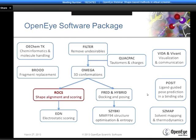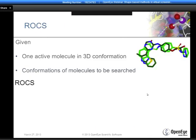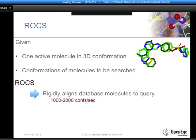The basic premises for ROCS operation are fairly simple. It requires a query—normally a molecule with interesting biological activity in at least one 3D conformation. The other input is the database of molecules being searched, which must be in conformationally expanded format. The ROCS calculation is entirely rigid: we use translation and rotation only to align conformations of each database molecule to the 3D query. One of the reasons we like the rigid approach is it's very fast—depending on the calculation type and hardware, you should expect speeds between 1,000 and 2,000 conformers per second, translating to roughly 20 to 40 molecules per second.